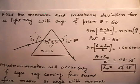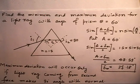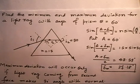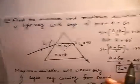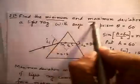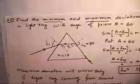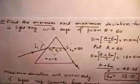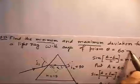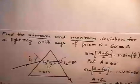This question says: find the minimum and maximum deflection angle for a light ray passing through a glass prism with given refracting angle theta equal to 60 degrees. We have to find minimum deviation and maximum deviation that can be developed through a prism. The angle of prism given is A equal to 60 degrees.